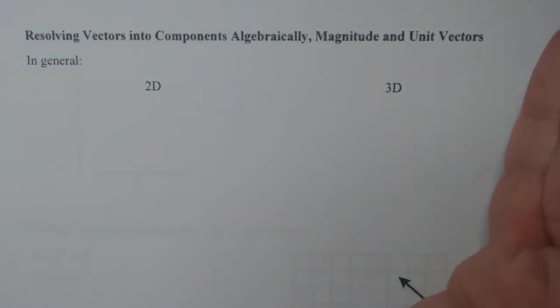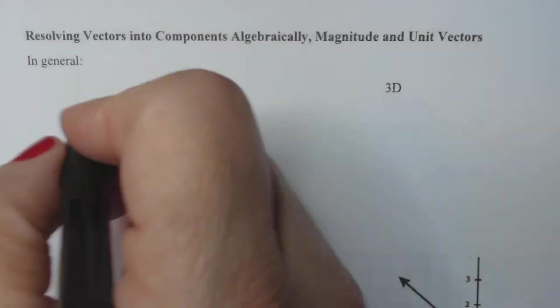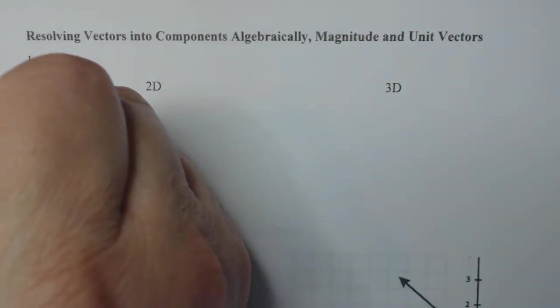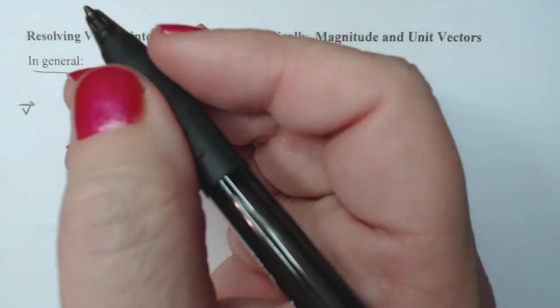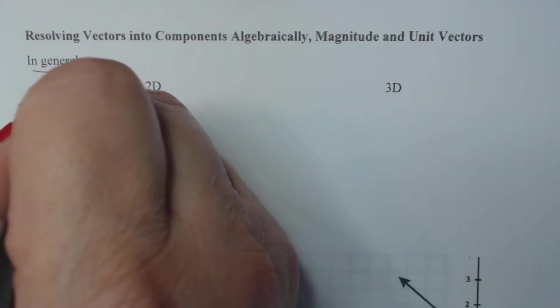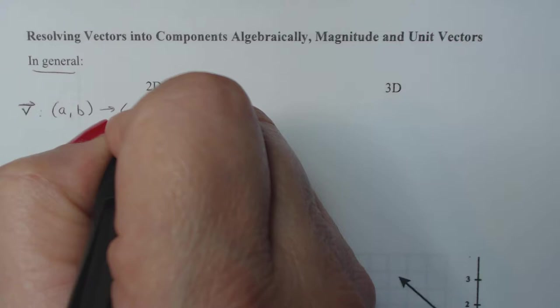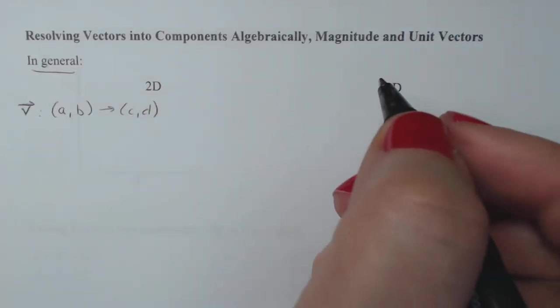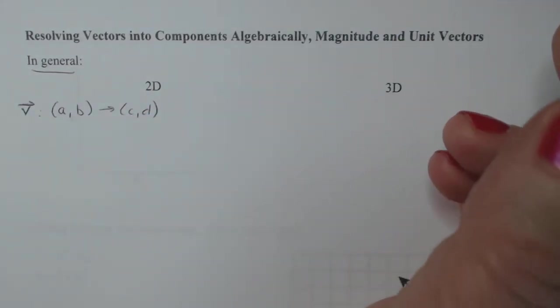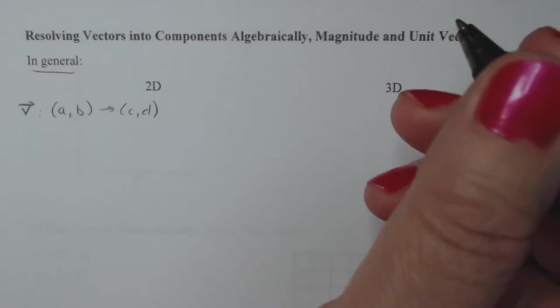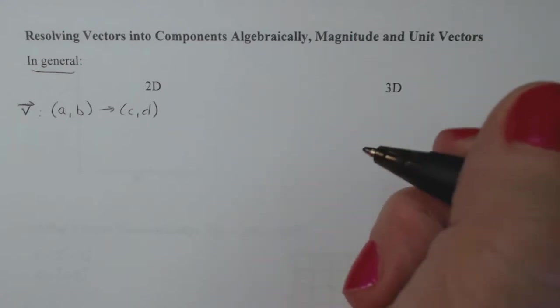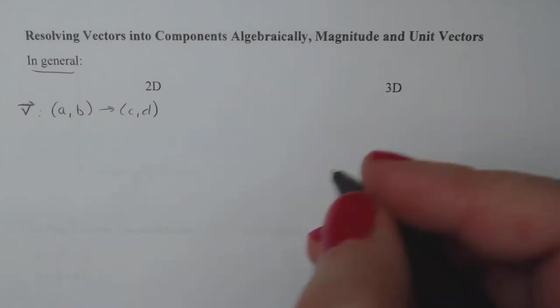So let's start with 2D. We always need to know with displacement vectors where the vector starts and where the vector ends. So I'm going to say in general, now in general means it's not a specific example, we'll do this first and then show an example. So in general if I'm going to go from the point (a, b) to the point (c, d), there is a formula to use in order to calculate the vector itself with i, j, calculate the magnitude, then calculate the unit vector, and we'll do all three.